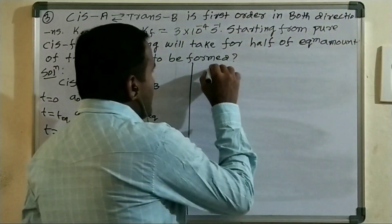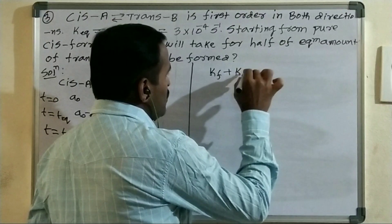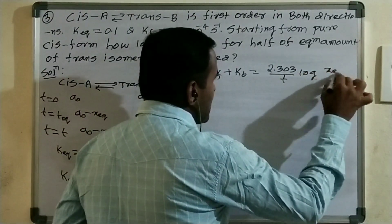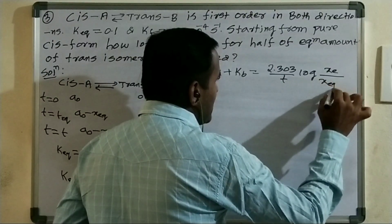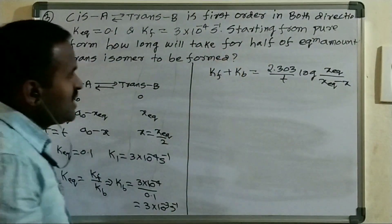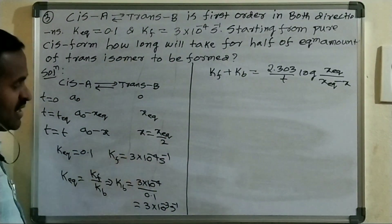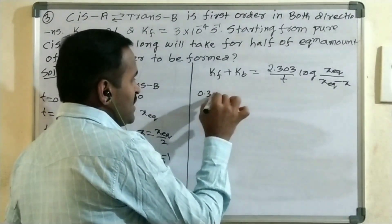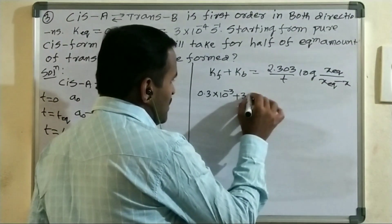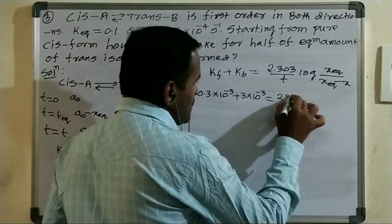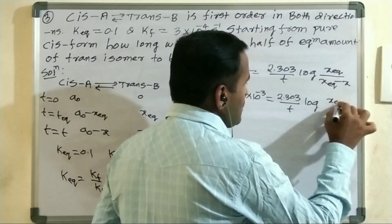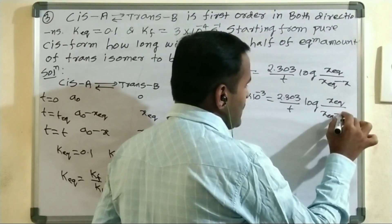Using the formula: Kf + Kb = (2.303/t) × log(X_eq / (X_eq − X)). Kf = 3×10⁻⁴ = 0.3×10⁻³, and Kb = 3×10⁻³. Taking 10⁻³ common: Kf + Kb = 3.3×10⁻³. So 3.3×10⁻³ = (2.303/t) × log(X_eq / (X_eq − X_eq/2)).